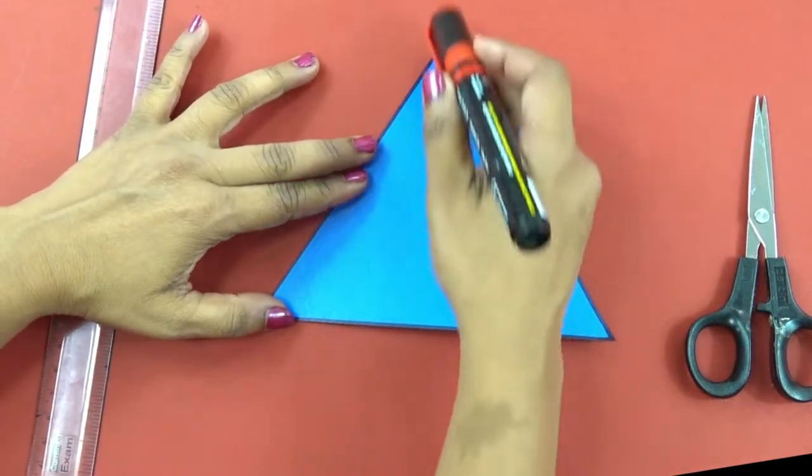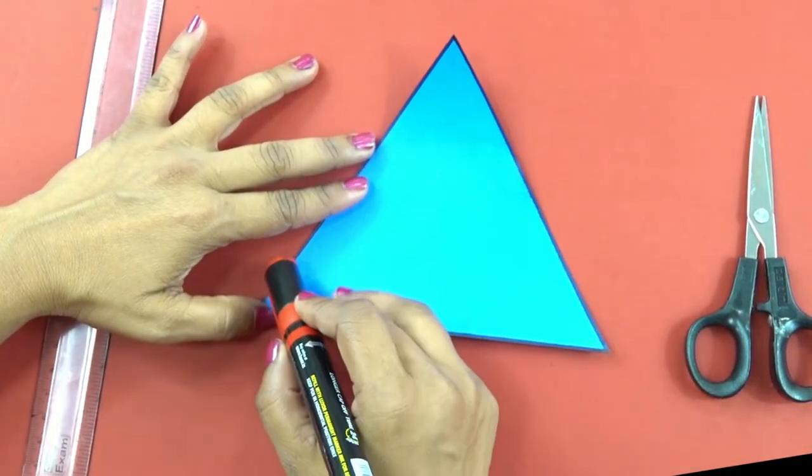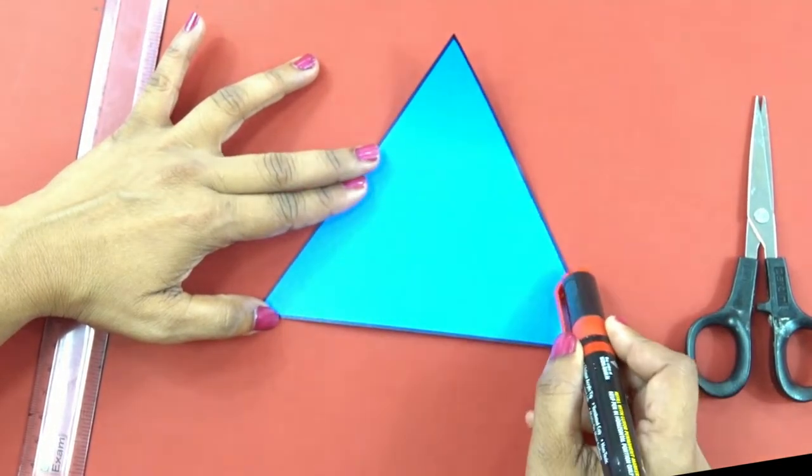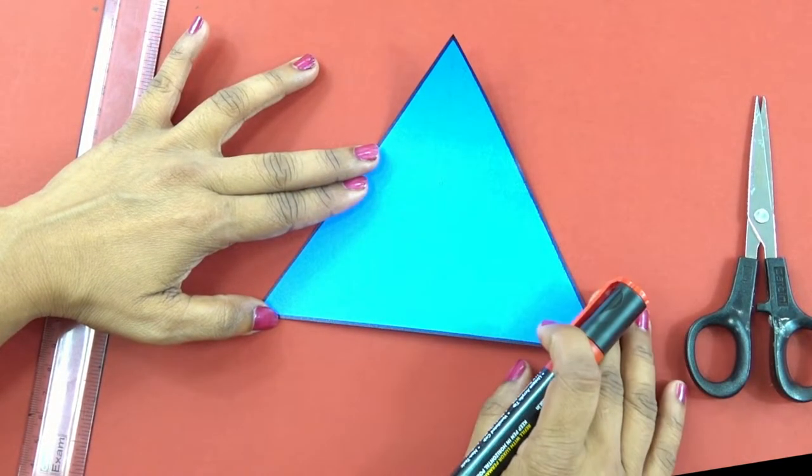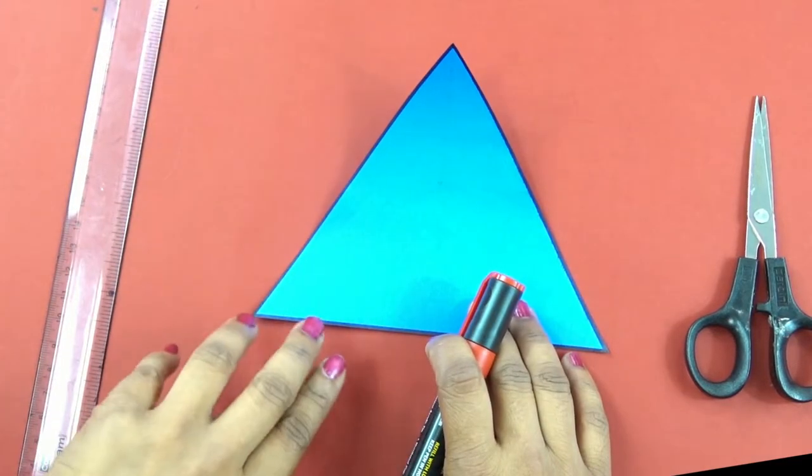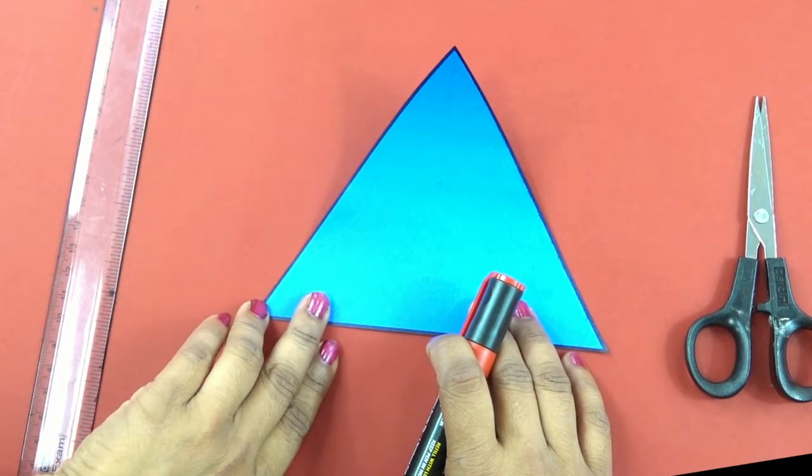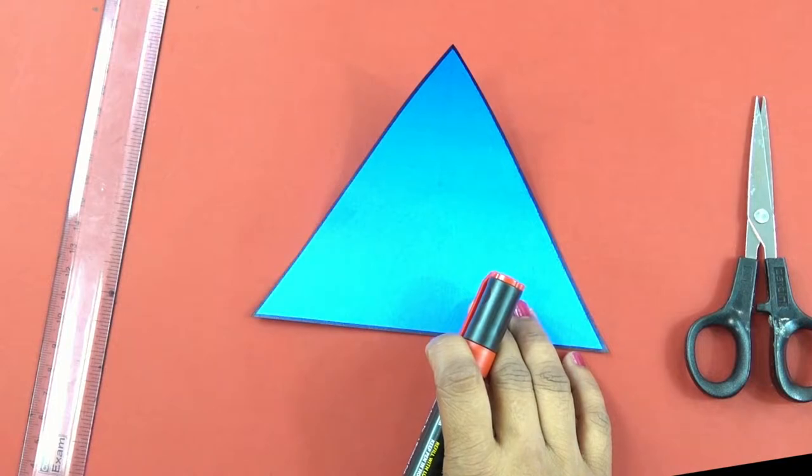Now we have an acute angle triangle with us wherein all the angles are less than 90 degrees. Can we do the same thing as we did in the right angle triangle? Let me think.